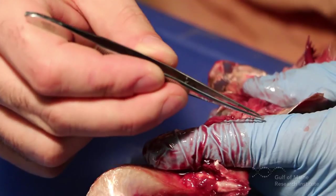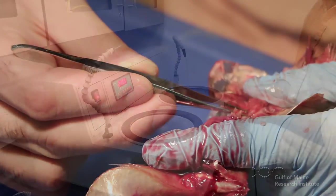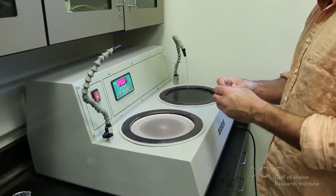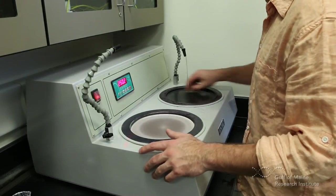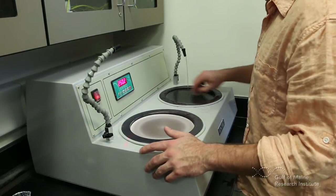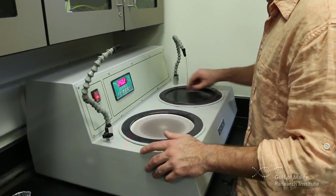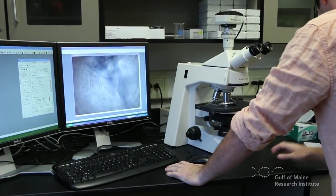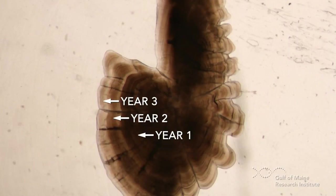The otoliths are then mounted on a slide. I then grind the otoliths and polish them until I can see the primordium, which is the center of the otolith. I look at the otoliths under a microscope. Like rings on a tree, otoliths have annual growth rings that you can see as alternating white and dark bands.